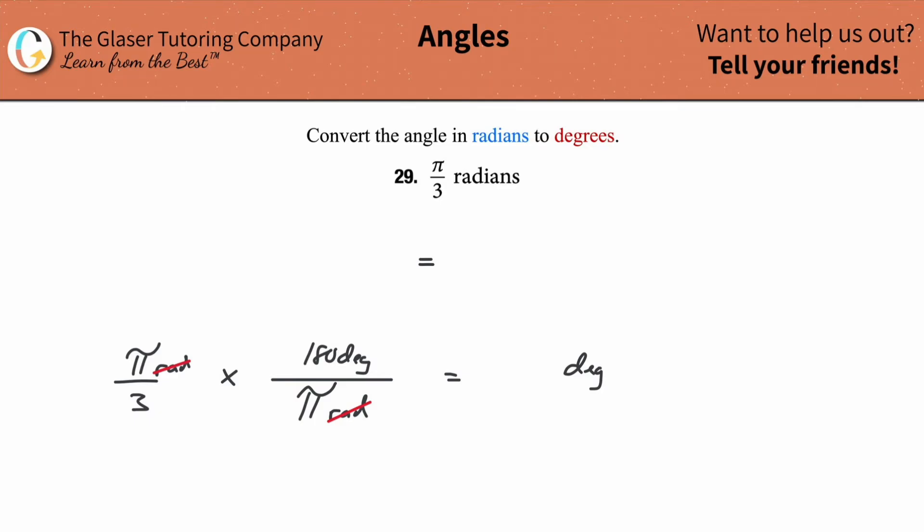So now the problem's done. It's just simplification now. Notice these pies can cancel because this is a multiplication, not a cross multiplication. So this is really saying pi divided by pi. So they cancel. And then you can also reduce further down the 3 and the 180. So you know 3 goes into 180 60 times.